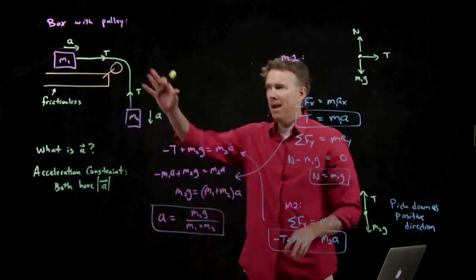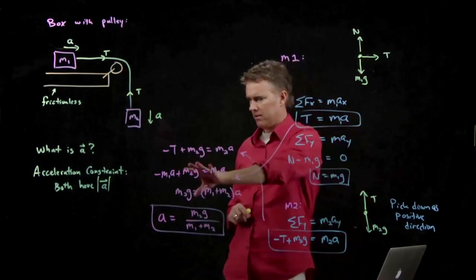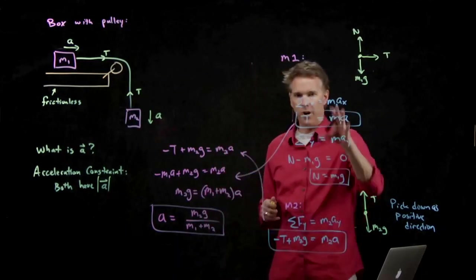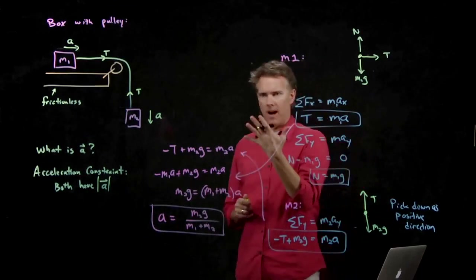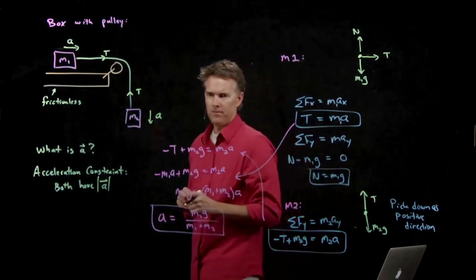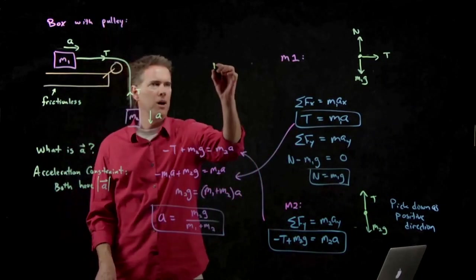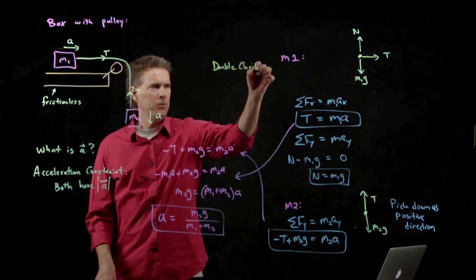Picture. Free body diagram. Math. F equals MA. Math. And now what was step five on our list? Anybody remember? Step five was double check. And what do we have to double check?